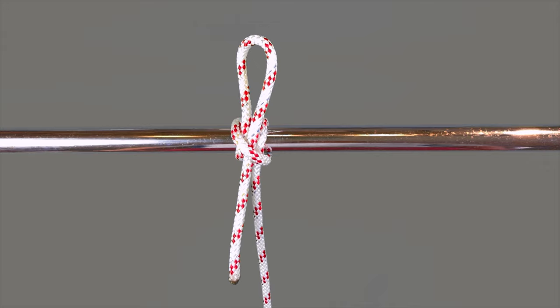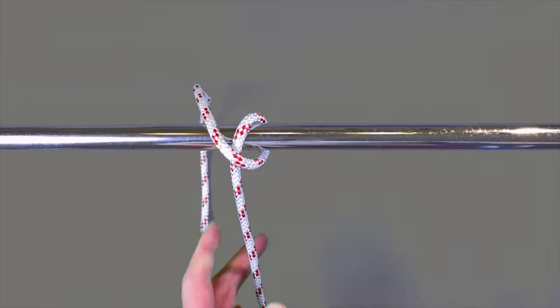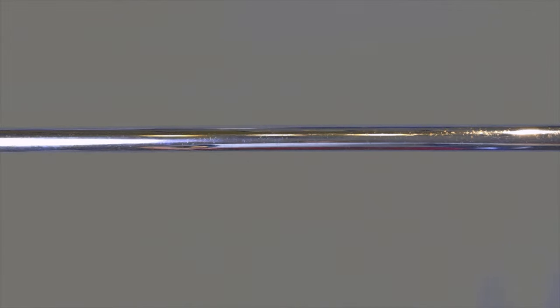The slipped clove hitch is a great fender knot that has a fast release option by simply pulling the bight out by tugging the working end.